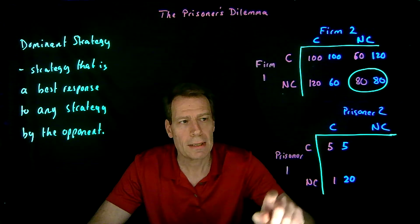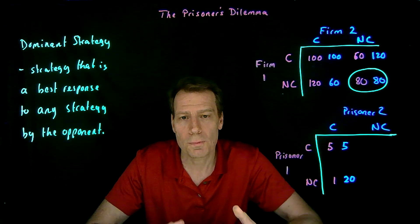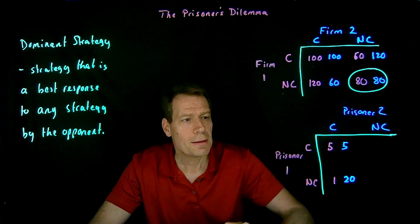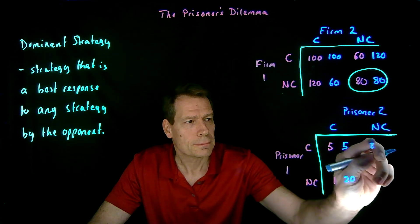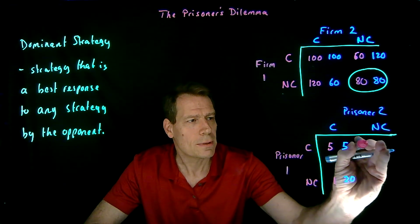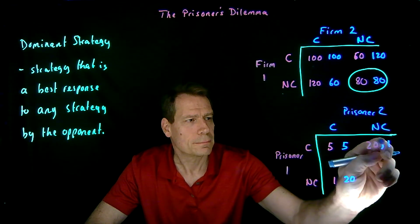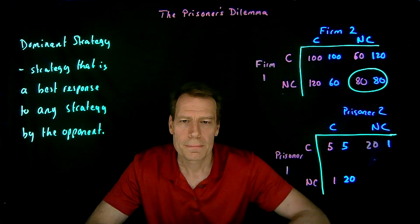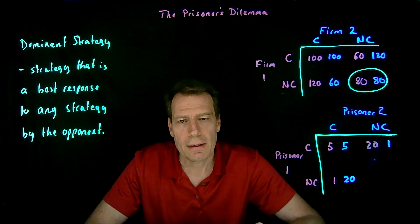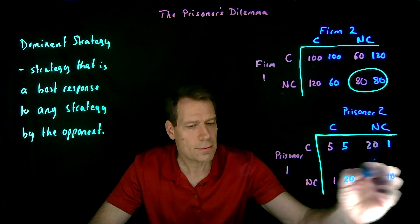Of course, if the reverse is true and you stick by the cooperation but he works with the prosecutor, then you're going to get 20 years in jail and he'll only get one year. And if both of you work with the prosecutor, I'll make a plea bargain with both of you and you'll both end up with 10 years in jail.